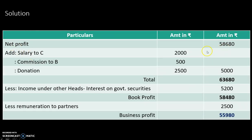The amount of net profit is Rs. 58,680. Now add back inadmissible items: we have the donation, and commission to B of Rs. 500. These are added back in order to compute the book profit.